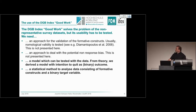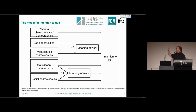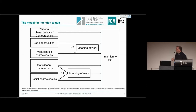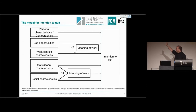The model was derived from theory. On the right-hand side is the binary target: intent to quit. On the left are several antecedents. Regarding the role of meaning of work: theory says it has a moderating role on work context characteristics such as work demands, physical demands, emotional demands, overtime, and pay satisfaction. In addition, meaning of work has a mediating role for motivational characteristics and social characteristics. This is one of the first times both roles — moderator and mediator — appear in one common model.